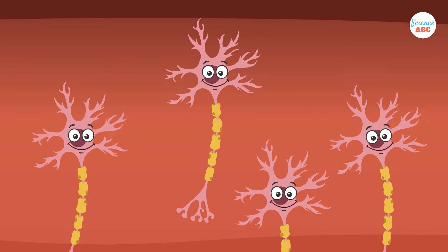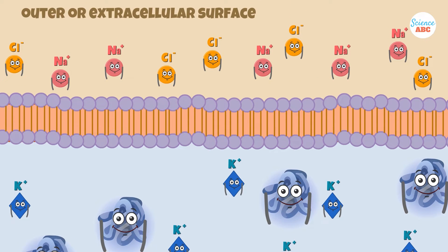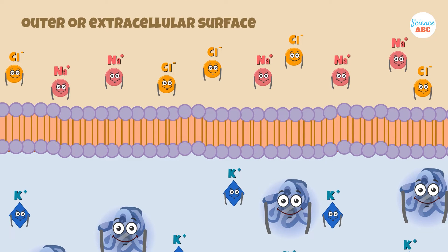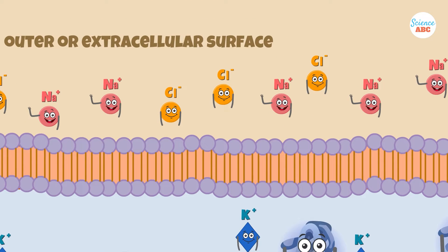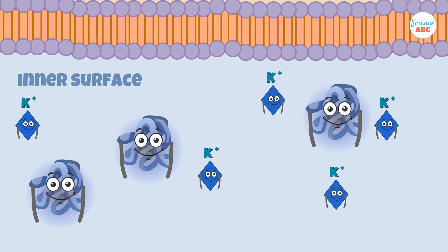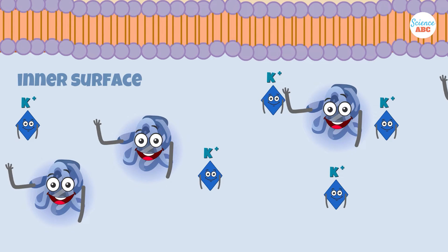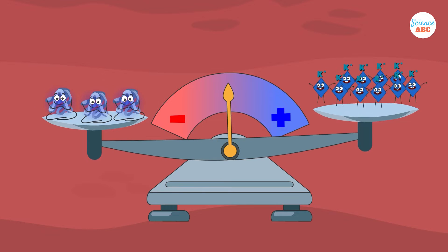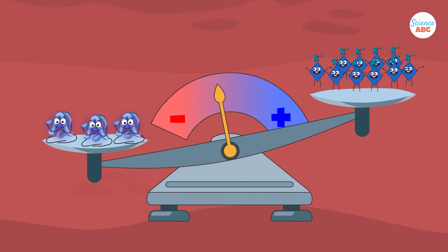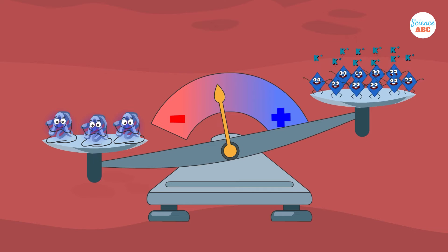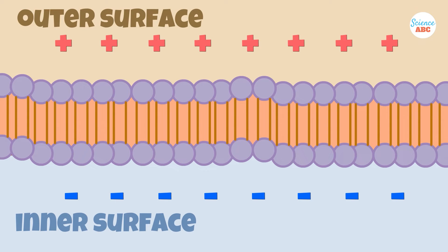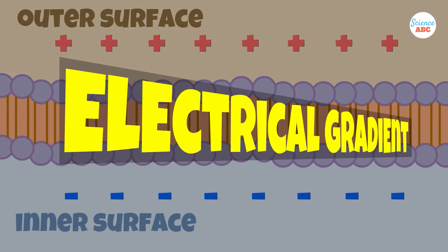The outer or extracellular surface of a neuron is bathed in a salty solution of positively charged sodium and negatively charged chloride ions. The inner surface has positively charged potassium ions and proteins that are negatively charged. The negatively charged proteins inside the cell are not balanced by an equal number of positive ions, making the inner surface of the neuron slightly more negative than the outside. This gives rise to an electrical gradient.